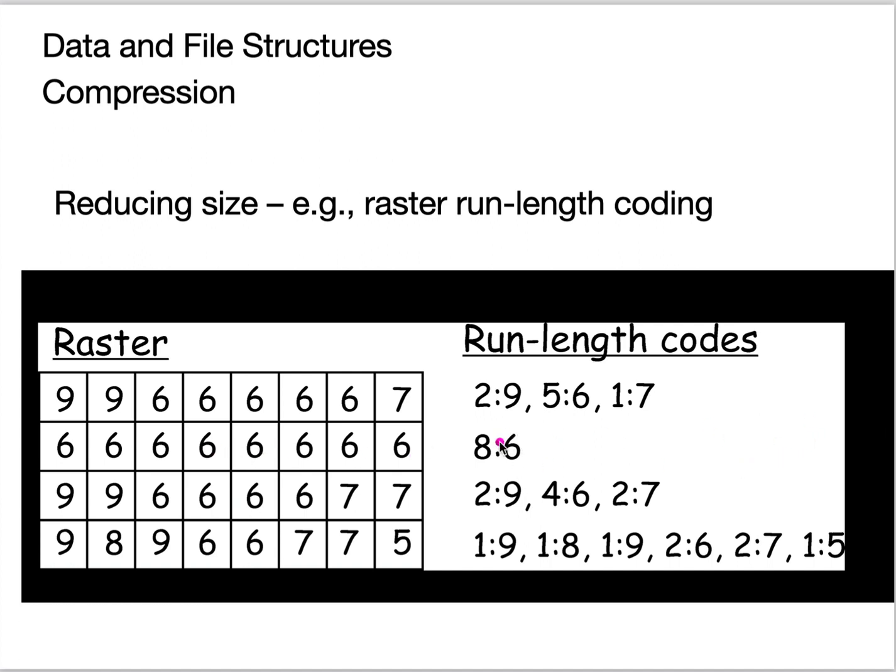Now, it doesn't always work. If you have highly variable data, you can actually take more space. So here's two, four, six, eight, ten, twelve pieces of information to store what are in these eight here. So you don't use run length coding for highly variable data.